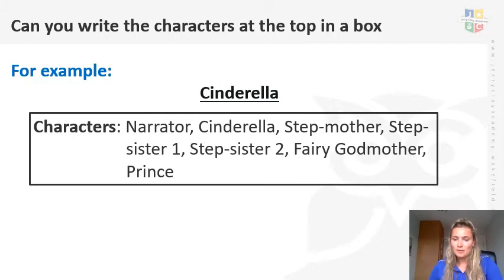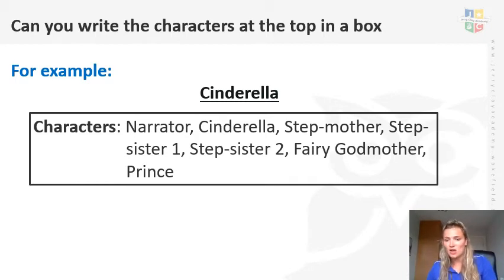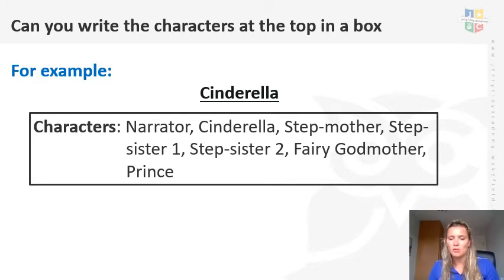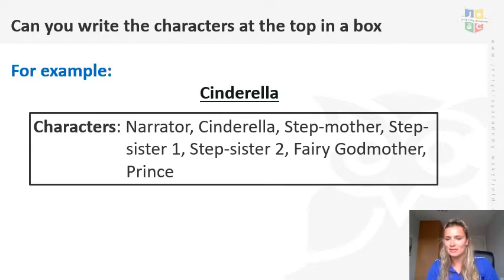Knowing what your characters were from yesterday's lesson when you were starting to think about who your characters were, you're now going to have a go at writing the characters. First of all, can you write the title of the play script that you are doing? For example, mine would be Cinderella. Then I'd like you to write the main characters in the story — try not to put too many in because it'll get a little bit complicated. So for example, my characters will be: narrator, Cinderella, stepmother, stepsister one and two, fairy godmother and the prince. Then you can draw a nice box around it. I'd like you to have a go at doing that now.